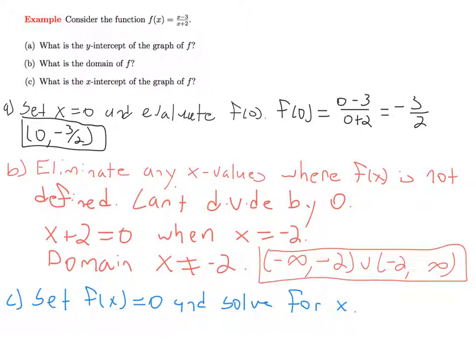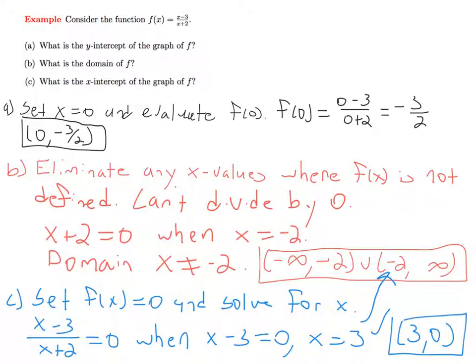So in this case, we have x minus 3 over x plus 2 is equal to 0 when the numerator, x minus 3, equals 0, which occurs just at x equals 3. And so when x equals 3, the numerator is 0. And we just want to check to make sure that this is indeed in the domain. So that checks out. And that means we have 1 x-intercept at 3, 0.